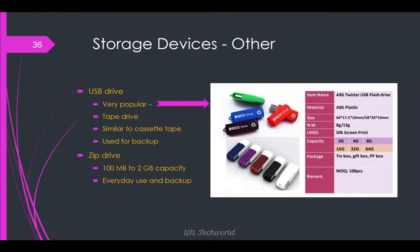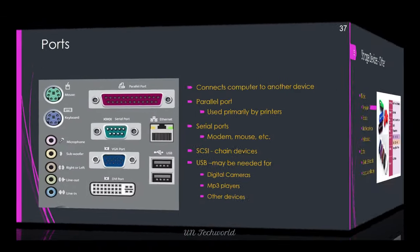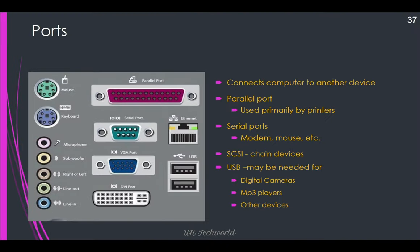Other storage devices include USB drives, tape drives similar to cassette tapes used for backup, and zip drives with 100 MB to 2 GB capacity for everyday use and backups. Ports used in computer connect the computer to other devices. The parallel port is used primarily by printers. Serial ports are used for modem, mouse, etc. USB ports are used for digital cameras, MP3 players, pen drives, USB keyboard, USB mouse, etc. Also microphone slots and speaker/woofer slots are on the motherboard.